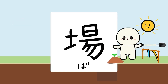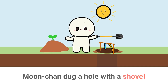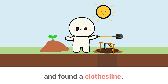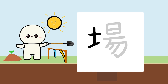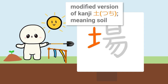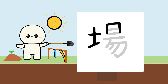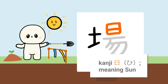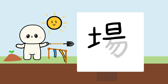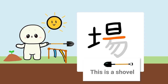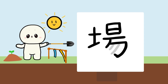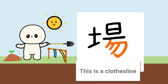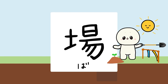Next kanji is ba. Moon-chan dug a hole with a shovel on a sunny day and found a clothesline. So this is a modified version of kanji tuchi meaning soil. This is kanji hi meaning sun. This is a shovel. And this is a clothesline. This is ba.